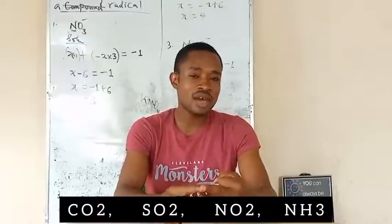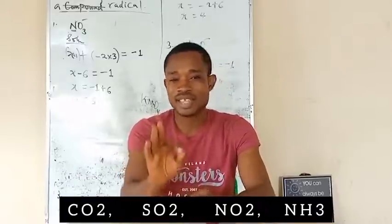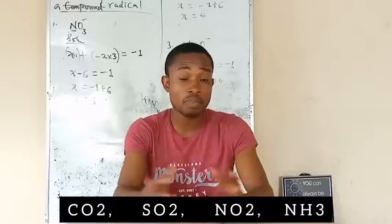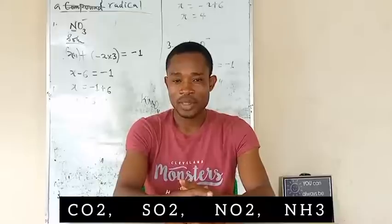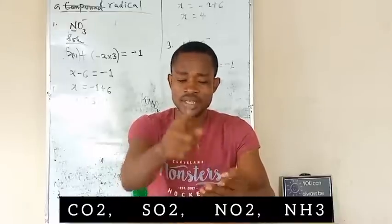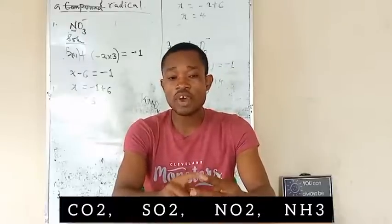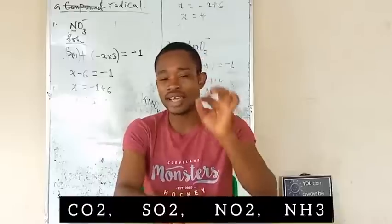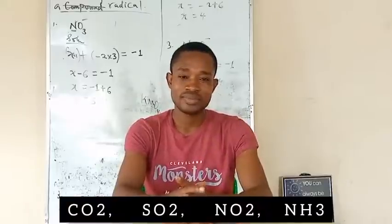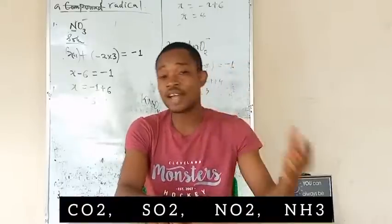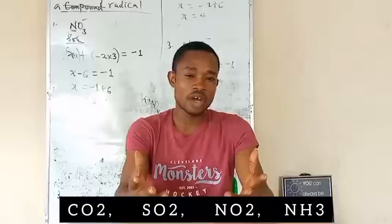Then we have ammonia gas. Ammonia gas is usually liberated when testing for ammonium ion, NH₄⁺ — that radical usually produces ammonia gas. Also, we have NO₂, nitrogen(IV) oxide gas. Nitrogen(IV) oxide gas is liberated from trioxonitrate(V) ion, NO₃⁻. Altogether we have 4 gases. If you add these 4 gases to the 13 ions, we have a total of 17 things that you need to be well prepared for when getting ready to take a salt analysis examination.